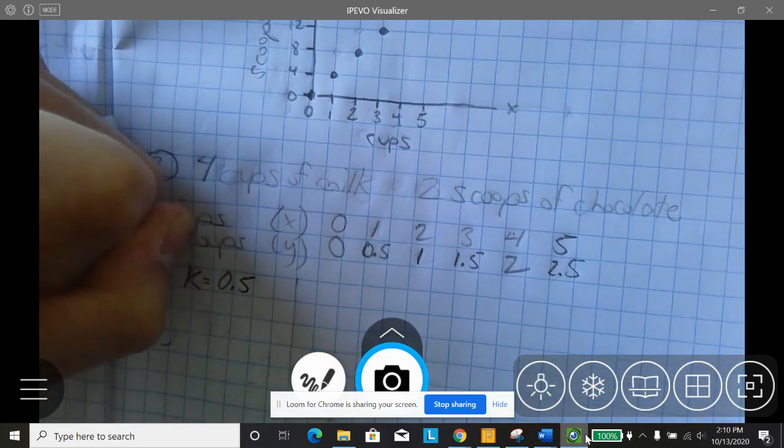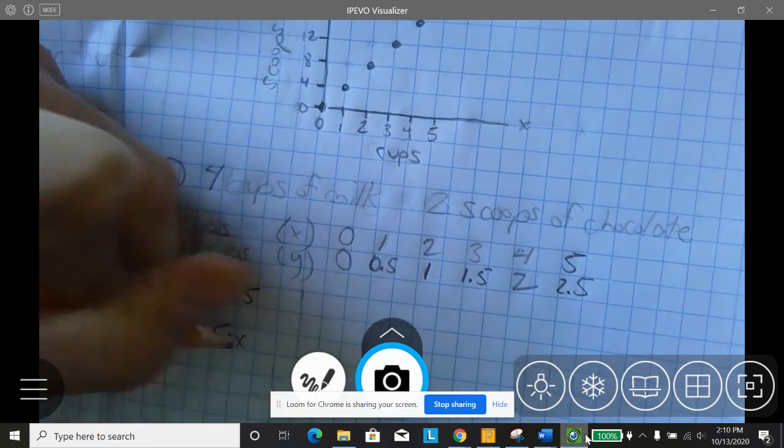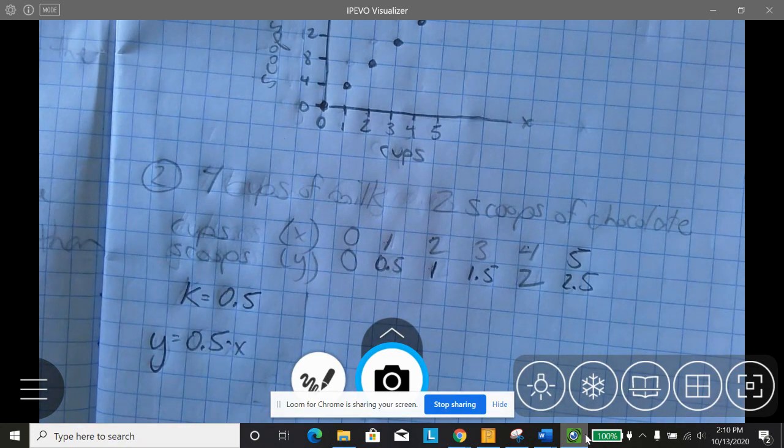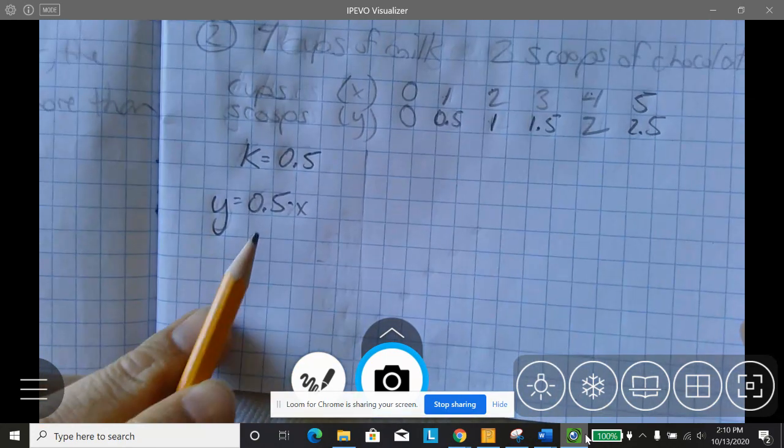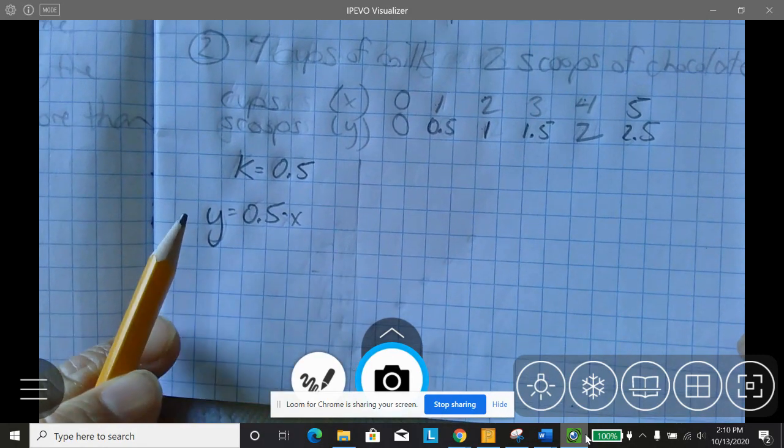Well, how would I write the equation? The equation would just be y equals 0.5 times x. Because again, the equation is just the constant of proportionality times x. And that's always going to equal your output.